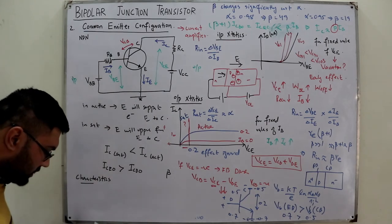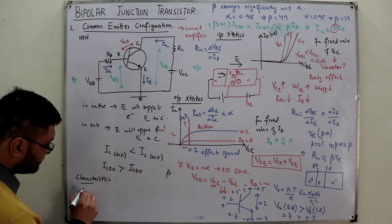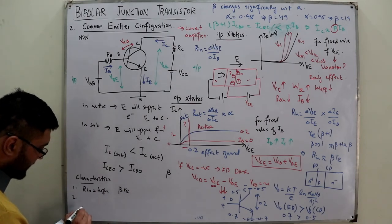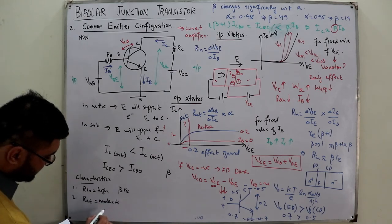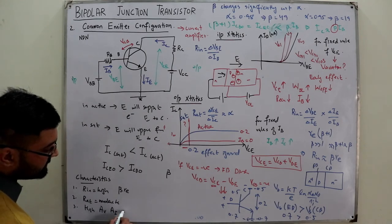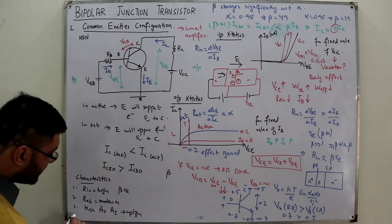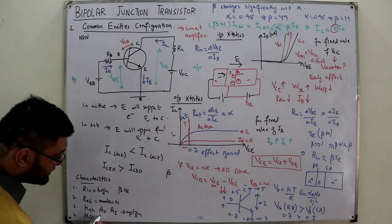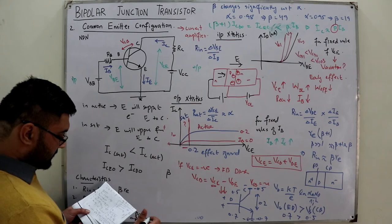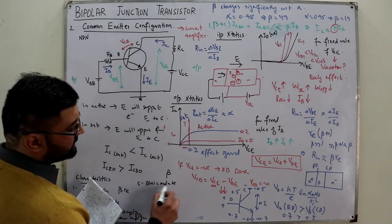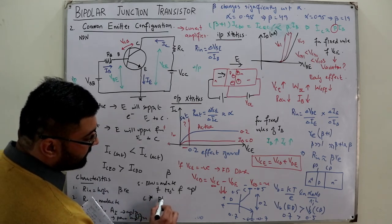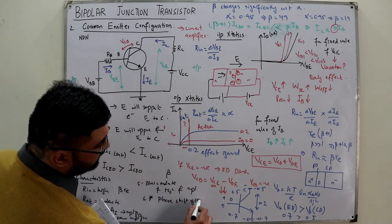The input resistance is high — it equals β·r_e, so a smaller r_e multiplied by a large β gives a high value. The output resistance is moderate. It has high voltage gain AV and high current gain AI, so it can be used as an amplifier. It also has high power gain, so it can be used as a power amplifier. The bandwidth is moderate, so it cannot be used as a high-frequency amplifier.